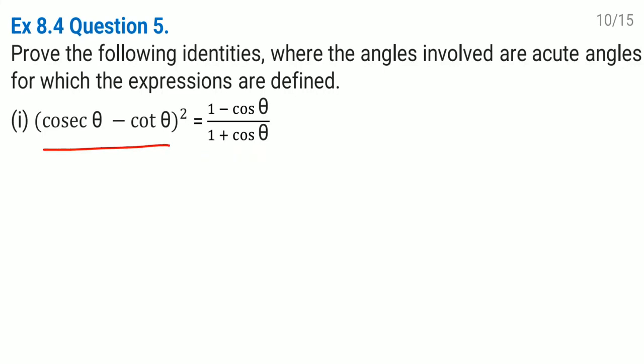So to prove this one first we'll take the LHS left hand side. See here left hand side cosec theta minus cot theta the bracket square. So whenever you see cosec, sec, cot, tan convert them in the form of sine and cos most of the time. Okay, so it is simple for us to solve.